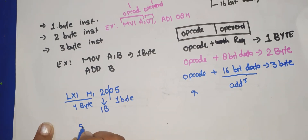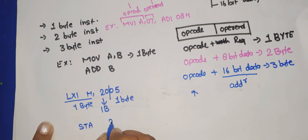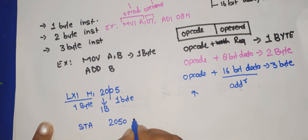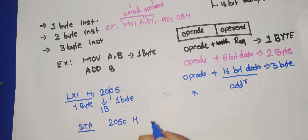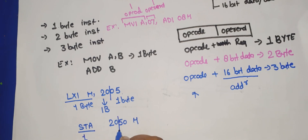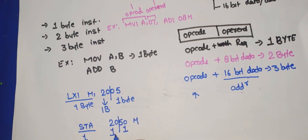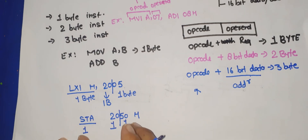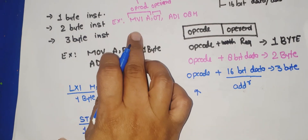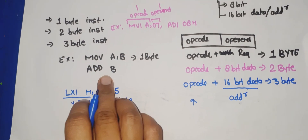One more example: STA 2050H. STA is the operation that stores the content of the accumulator at a particular memory location. The opcode STA takes one byte, and the address 2050H takes two bytes — one byte for 50 and one byte for 20 — so the total is three bytes. These are three-byte instructions, those are two-byte instructions, and the others are one-byte instructions.